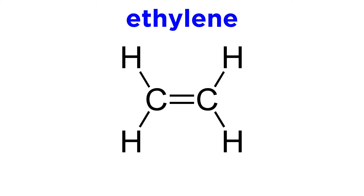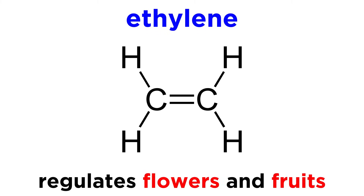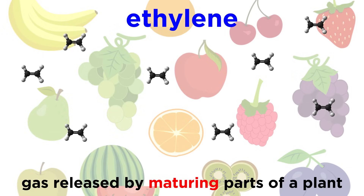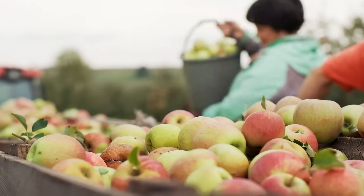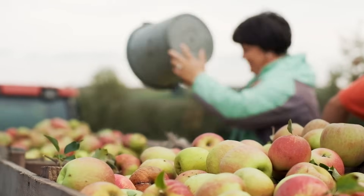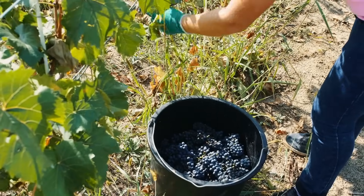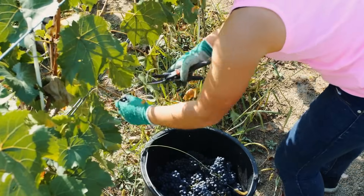Like gibberellins, ethylene, the last important plant growth hormone, is responsible for regulating flowers and fruits. What makes ethylene different from the other hormones is that it's actually a volatile gas released by maturing and senescing parts of a plant. The gas also stimulates other nearby flowers and fruits to mature and age. If you've ever used the trick of putting ripe and unripe fruit together in a paper bag to help the unripe fruit ripen faster, then you've used ethylene. Commercially, farmers spray ethylene on fruit crops so that all of the fruits ripen at approximately the same time, making the harvesting process more efficient.